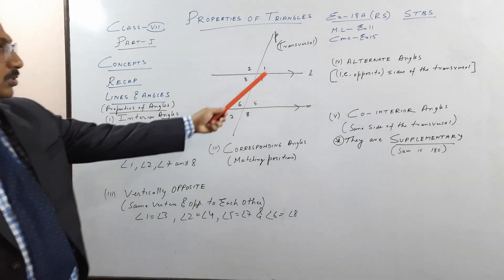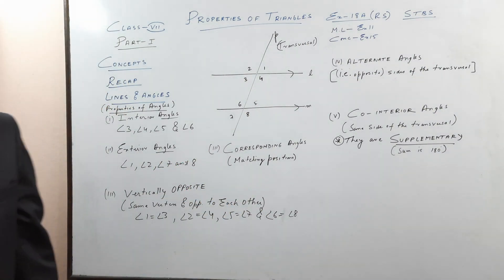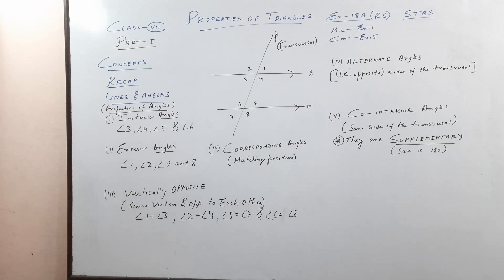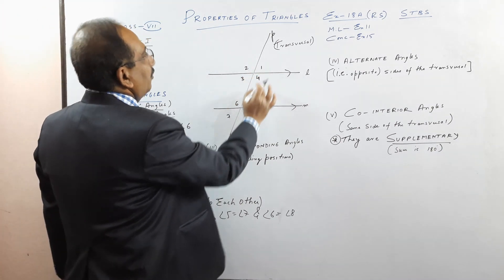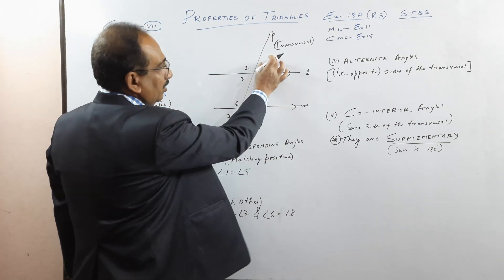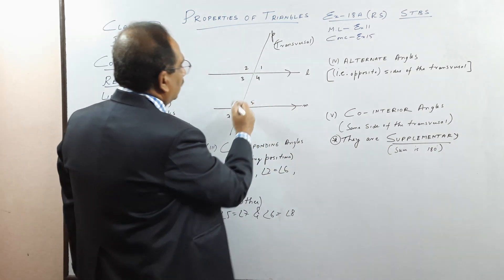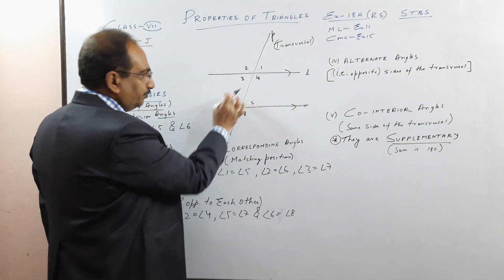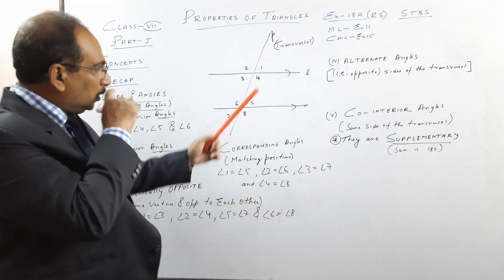Corresponding angles: corresponding means matching position. In this diagram, matching-position angle pairs are: 1 and 5, 2 and 6, 4 and 8, and 3 and 7. When the lines are parallel, corresponding angles are equal.